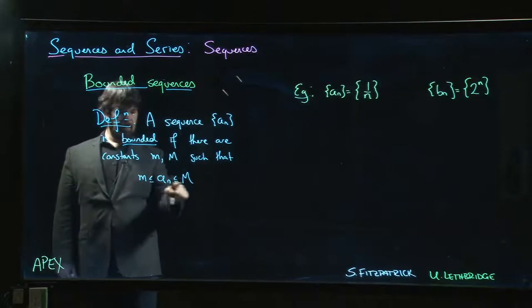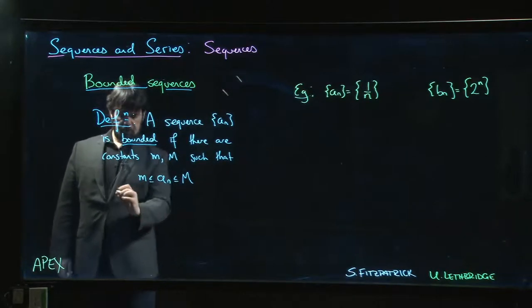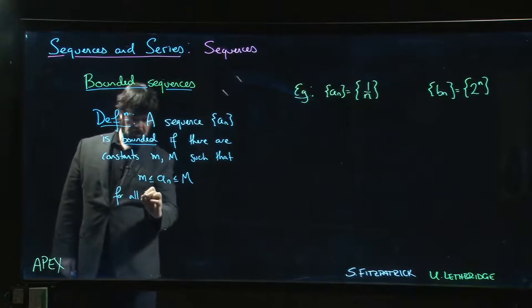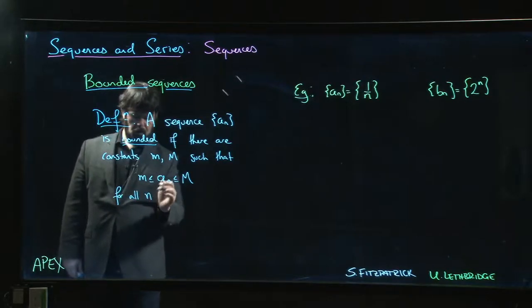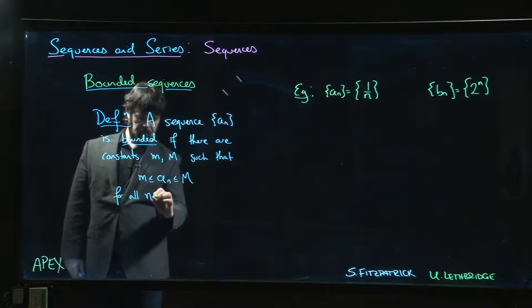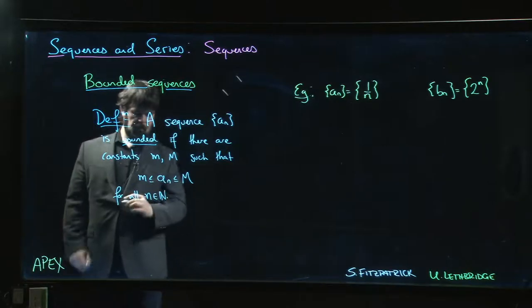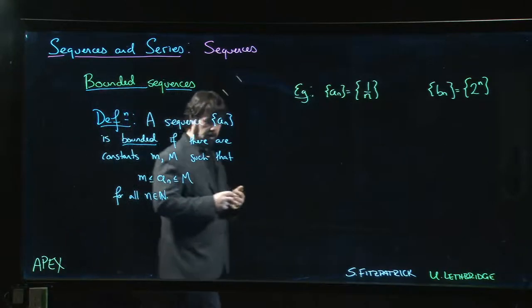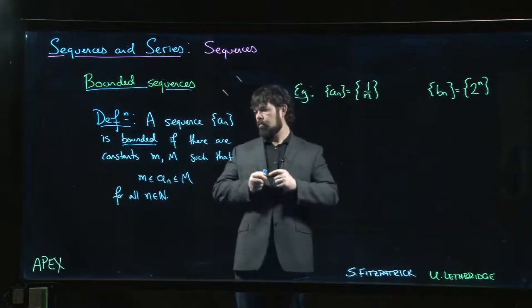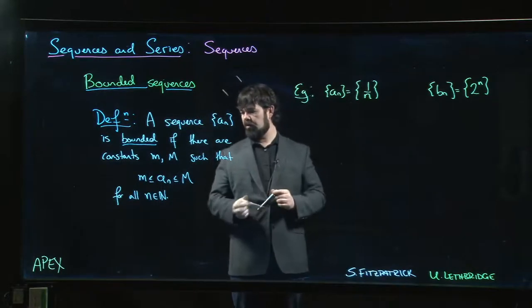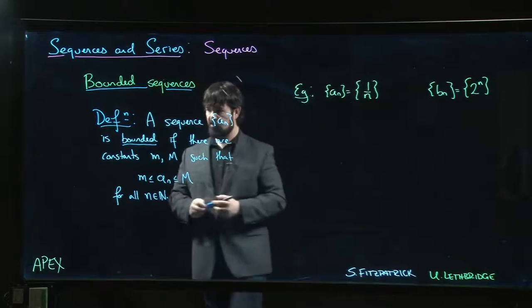So little m is your lower bound, big M is your upper bound, and of course we need that to hold for all natural numbers. It's for all n equal to 1, 2, 3, and so on. We require every single term in the sequence to be between these two bounds.